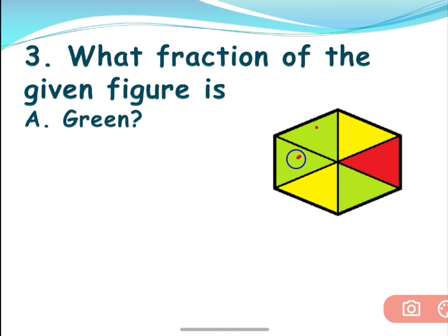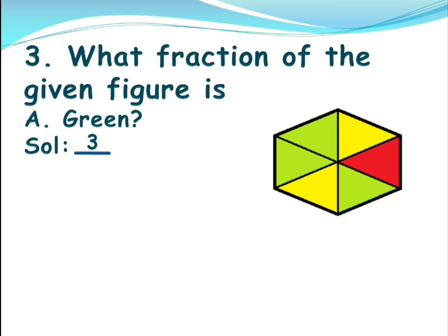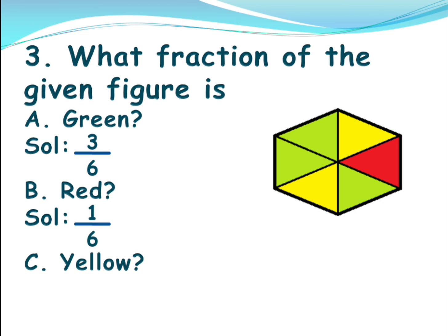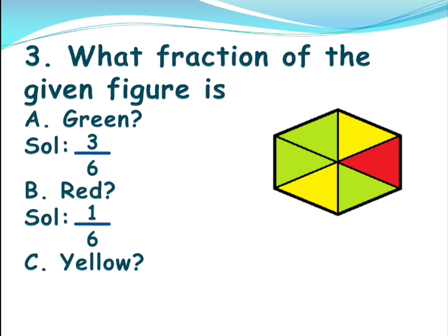Let's see the questions. Green: how many parts are colored green? One, two, three — three parts. So numerator is three and denominator is six, giving three by six. Red: only one part is colored red, so the fraction is one by six. Yellow: two parts are colored yellow, so the fraction is two by six.